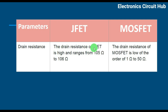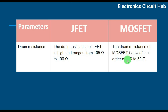Drain Resistance: The drain resistance of JFET is high, ranging from 10^5 Ohm to 10^6 Ohm. The drain resistance of MOSFET is low, in the order of 1 Ohm to 50 Ohm. But nowadays, you can find MOSFETs with drain resistance in milliohms — like 10 milliohm, 8 milliohm, even 4 milliohm.